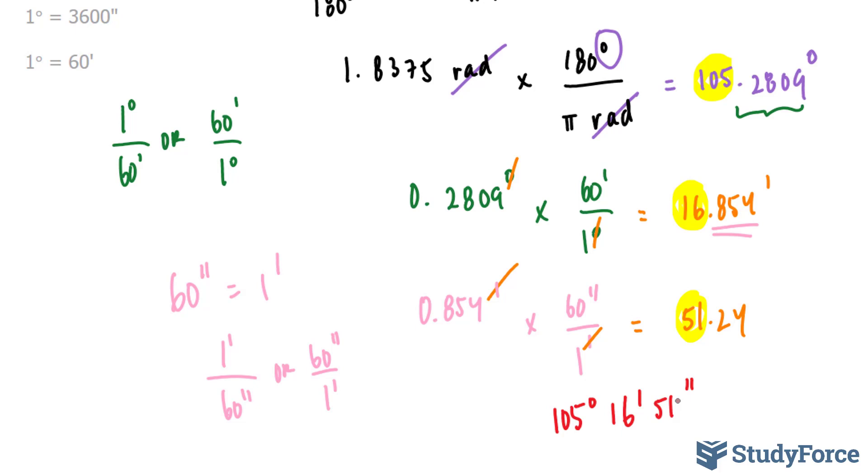And there you have it. That is how to convert a number that is in radians to degrees, minutes, seconds.